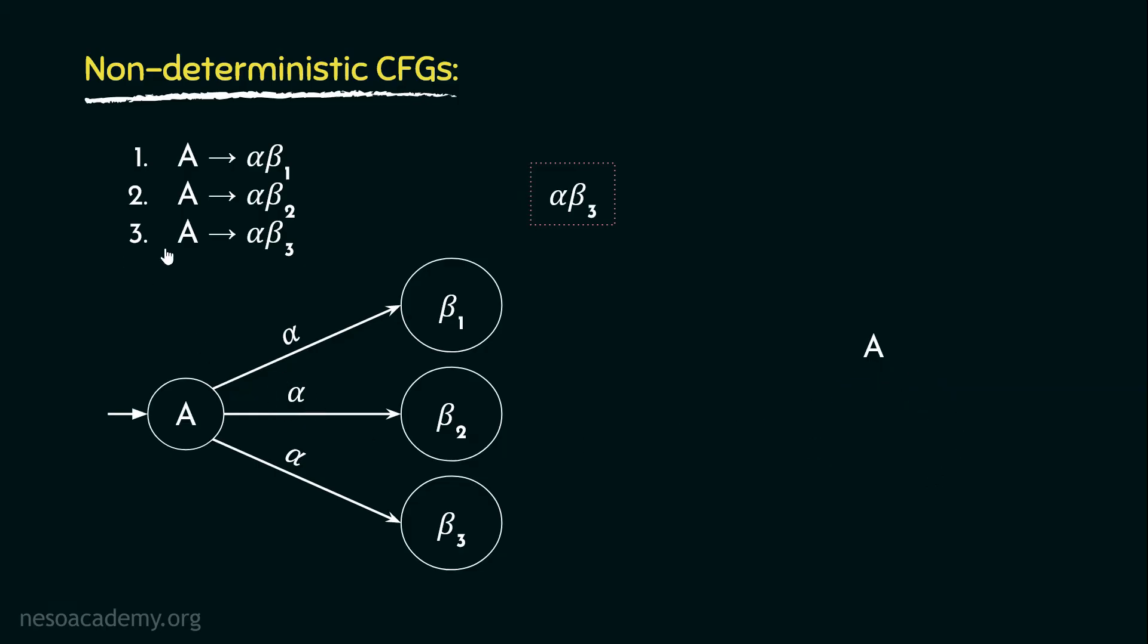Finally using the third production, the machine would derive α once more and then it would derive β₃. So now when the machine reaches this β₃, it would realize that the correct production rule has been chosen and the intended string, that is α followed by β₃, has been generated. Now to derive this string, the parser has to perform backtracking more than once. This happened due to the common prefixes.